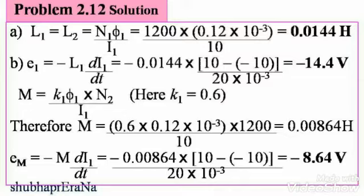First part is the self-inductances. Since the number of turns is the same, L₁ = L₂ = N₁ × (φ₁/I₁) = 1200 × (0.12×10⁻³) / 10 = 0.0144 Henry.